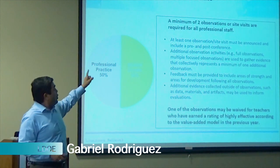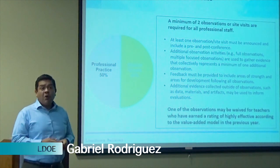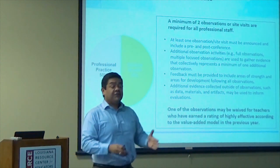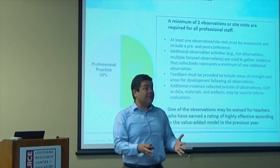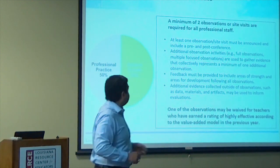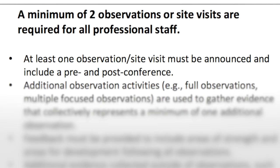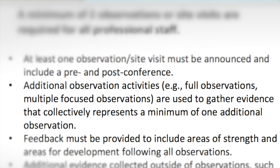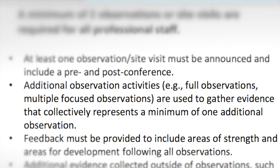A minimum of two observations or site visits are required for all professional staff, including teachers. School leaders also receive two observations or site visits from their supervisors. At least one of the observations or site visits must be announced and includes a pre and post conference. Additional observation activities — such as full observations or multiple focus observations — can be used to collectively represent a minimum of one additional observation.